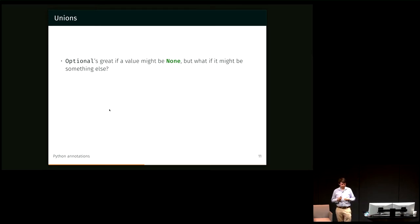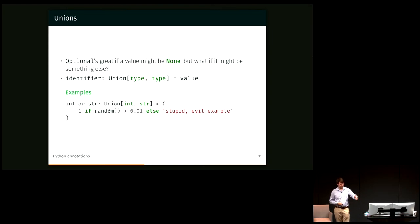So what if I think it's not that it might be none, but it might be an integer or it might be a string. Well, we can use something called union for that, which says exactly that. It's one of the, it's either this thing or another thing or something else. Again, this is, I've shown two here, but it could be three different things that it might be.